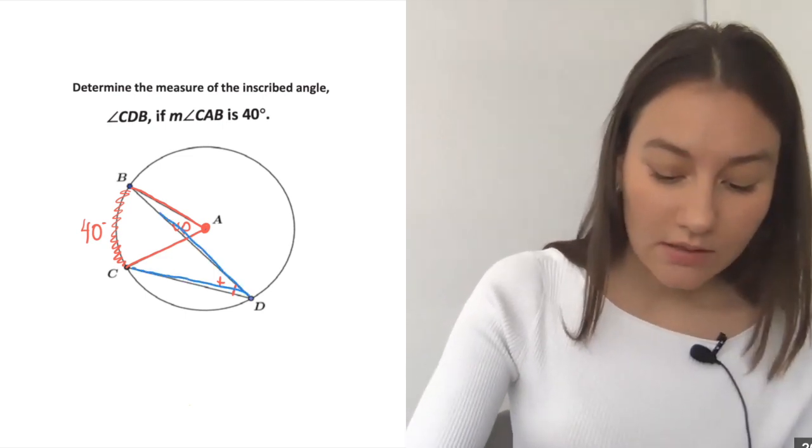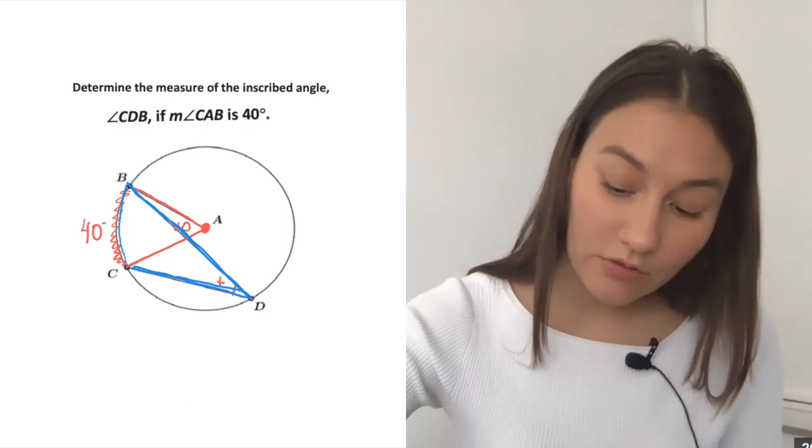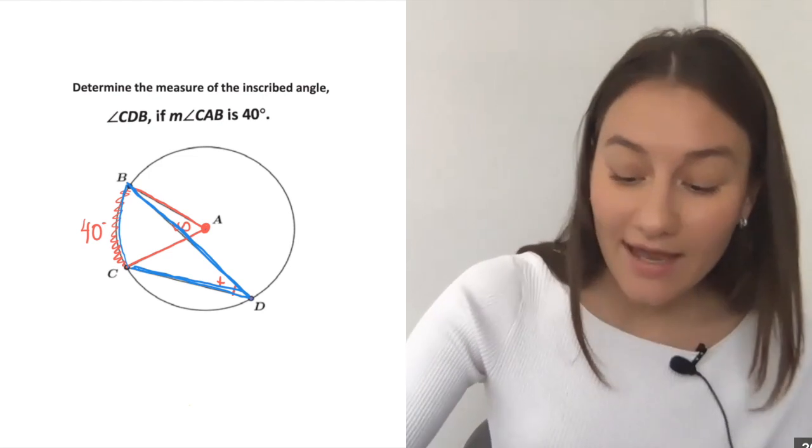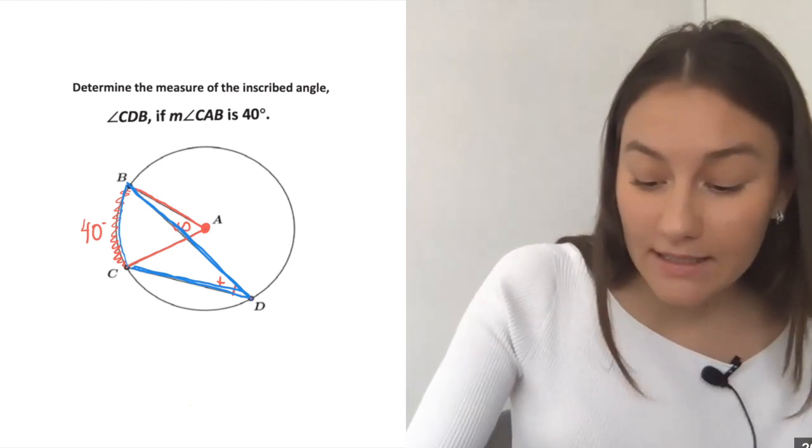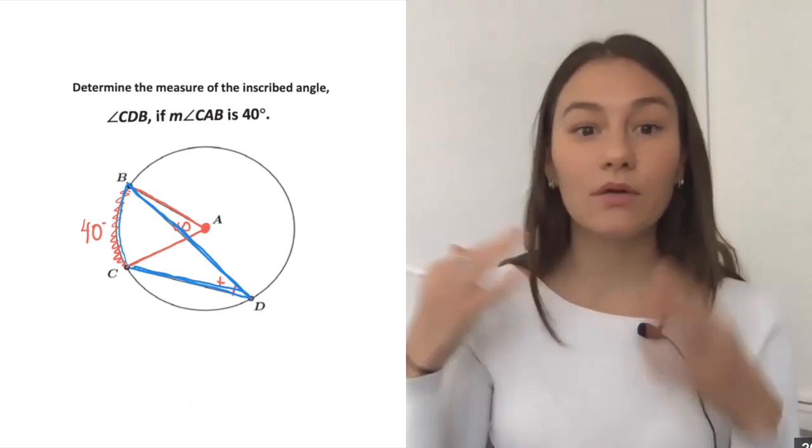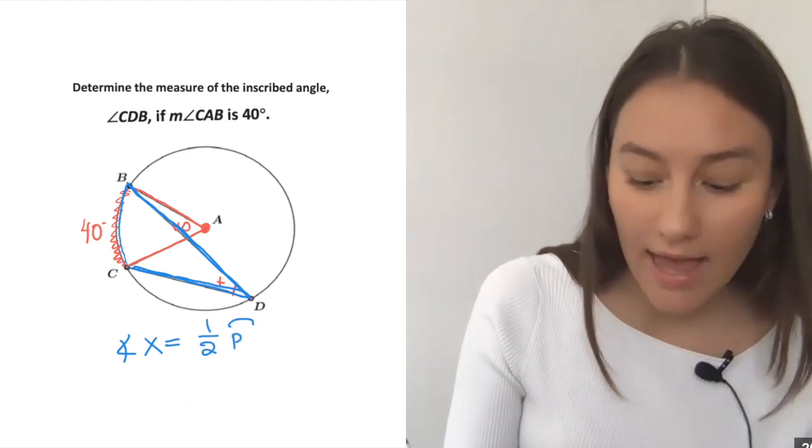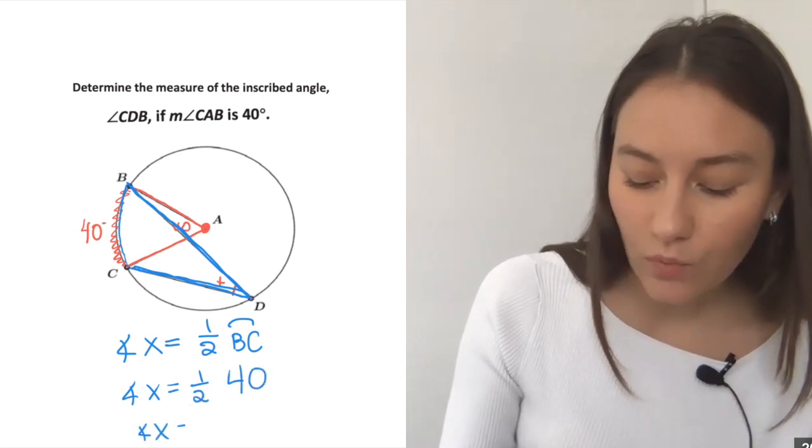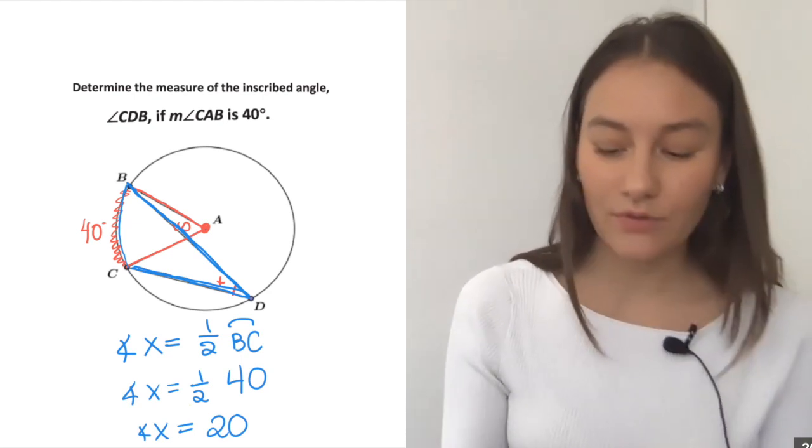The next thing I noticed, and I'll do this in a different color for you guys, the next thing I noticed is that angle CDB is an inscribed angle. It's an angle formed with one point on the circle. And that actually is inscribed in the same arc, right? So that arc BC is going to be double that angle, inscribed angle. So again, I'm going to write out my inscribed angle formula. So angle X is going to be one half the arc BC. So angle X is going to be one half of 40. What's one half of 40? 20. So my X is equal to 20.